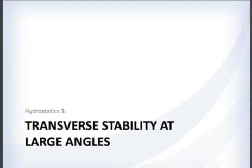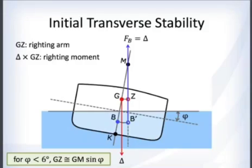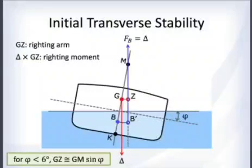That covers small angles. For large angles — above about 6 degrees — the approximation GZ ≈ GM × sin(φ) no longer holds, and you have to perform a full calculation. This is the limitation of initial transverse stability analysis.